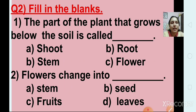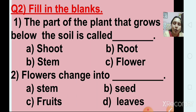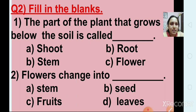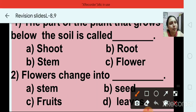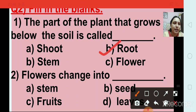Question number 2: Fill in the blanks. Here also 4 options are there for each question and you have to choose the right answer. Question number 1: The part of the plant that grows below the soil is called — options are shoot, root, stem, and flower. The right answer is root, option B. Shoot, stem, and flower grow above the soil.